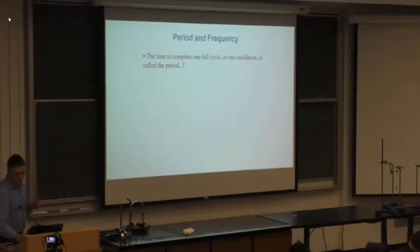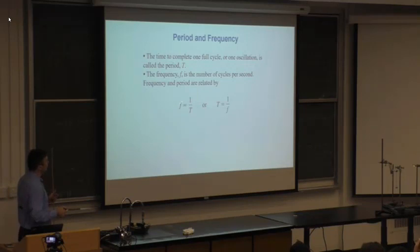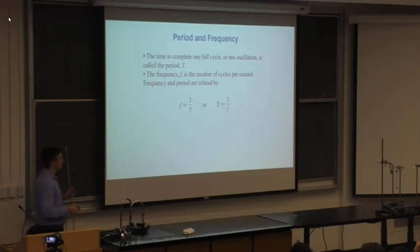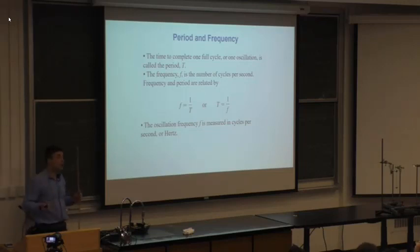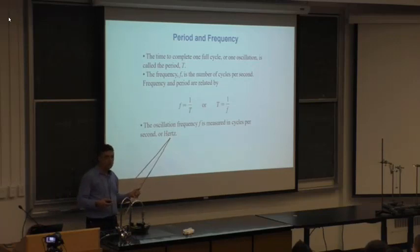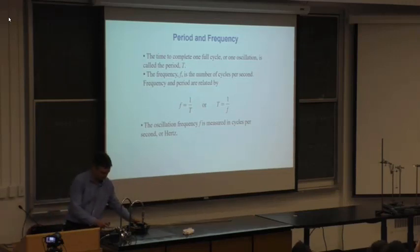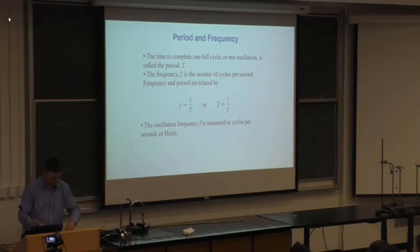The frequency is the number of cycles per second. Frequency and period are related by: frequency = 1 / period, and period = 1 / frequency. If the period is in seconds, the frequency is in inverse seconds (cycles per second). One hertz equals one cycle per second — named after the physicist Hertz.